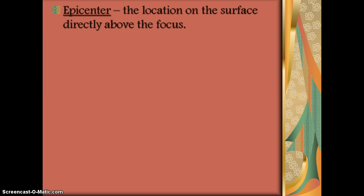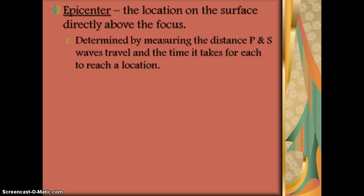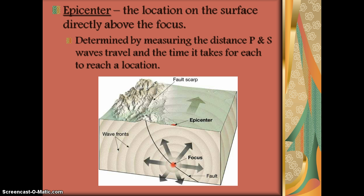The epicenter is the point on the surface where we indicate where the earthquake happened. It sits directly above the focus. We can determine this by finding out how quickly the P and S waves arrive at different seismic stations. As the earthquake happened below a mountain in the faulted area, seismic graphs all over the world record when the P and S waves arrive. Depending on how close that seismic station is will determine how far away it is from the epicenter. We can use multiple readings from different seismic stations to get a better idea of where that earthquake happened.